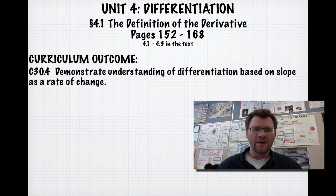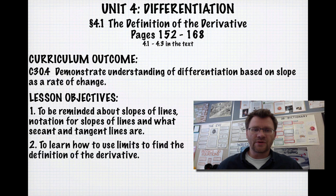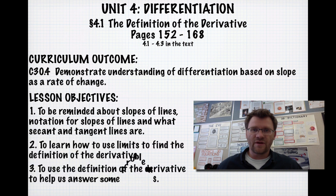Our curriculum outcome is to demonstrate an understanding of differentiation based on slope as a rate of change. Our lesson objectives are: first, to be reminded about slopes of lines, notation for slopes of lines, and what secant and tangent lines are; second, to learn how to use limits to find the definition of the derivative; and third, to use the definition of the derivative to help us answer some problems.